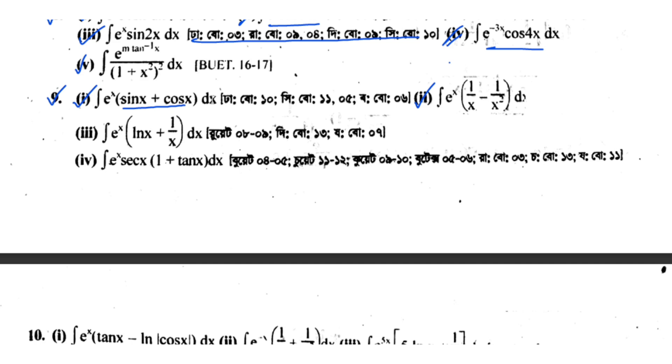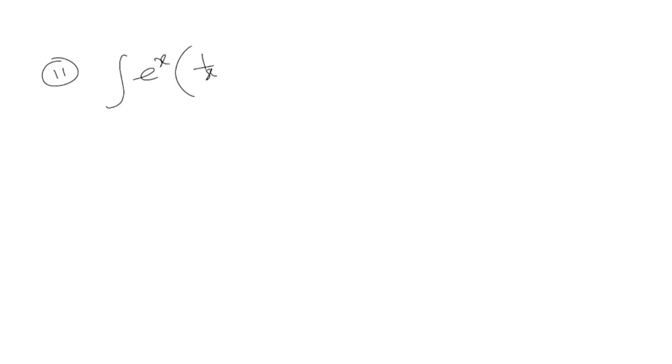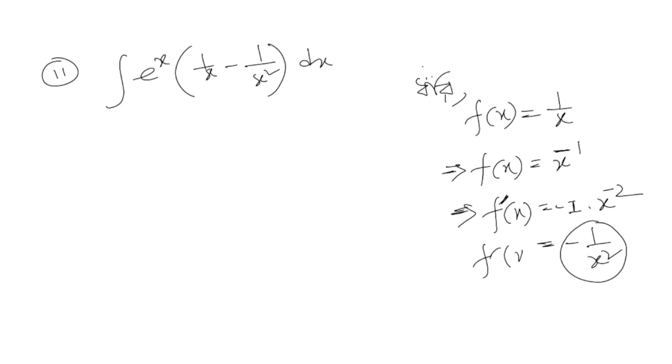Next is problem number (iii). Integration of e^x times (1/x - 1/x²)dx. The first time you might think this is difficult, but if you remember the derivative - 1/x is there, so f(x) could be 1/x.